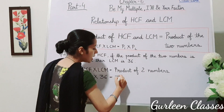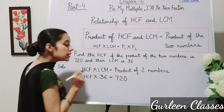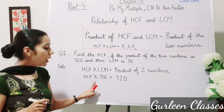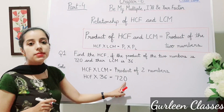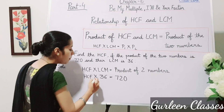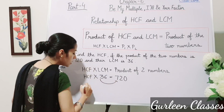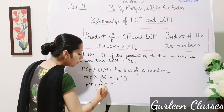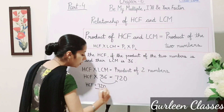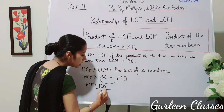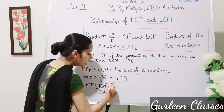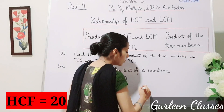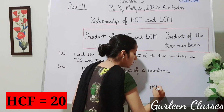When a term on the left-hand side is multiplied, moving it to the right-hand side means it becomes divided. So HCF is equal to 720 divided by 36, which gives us HCF equal to 20.